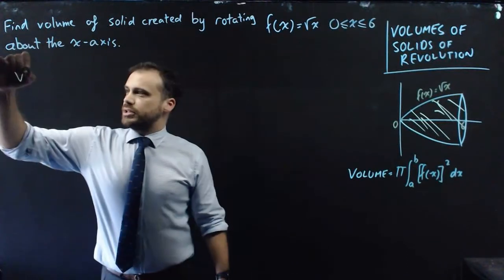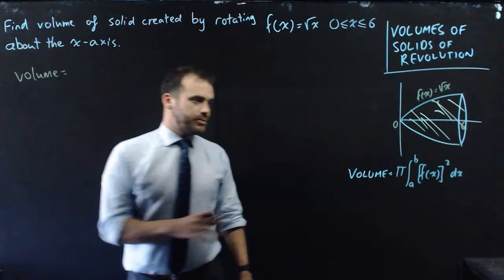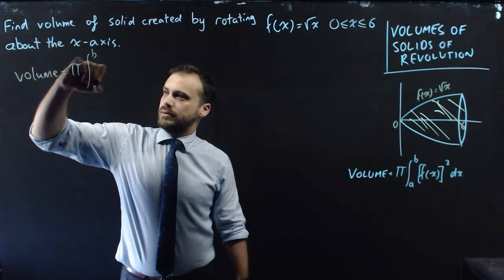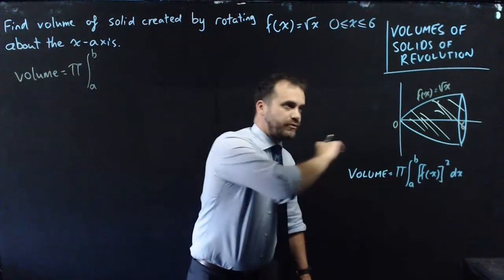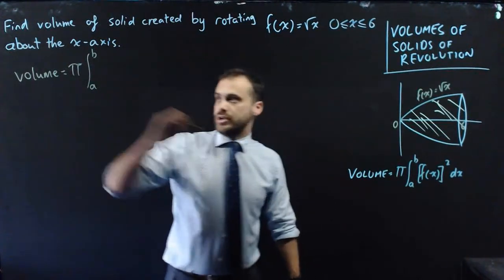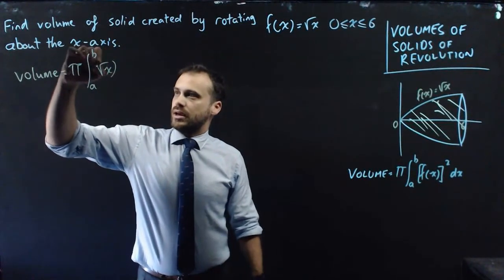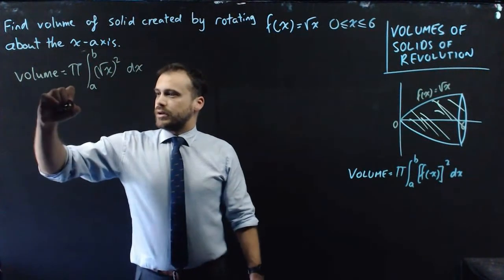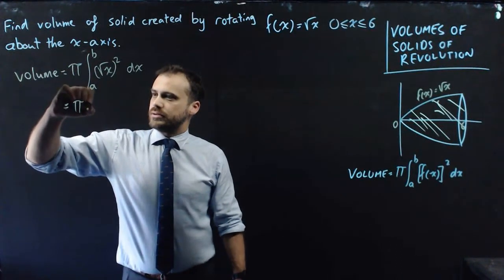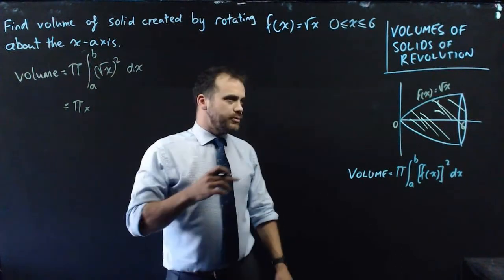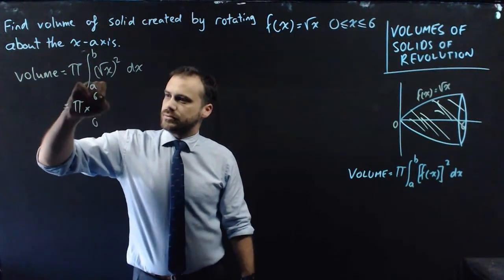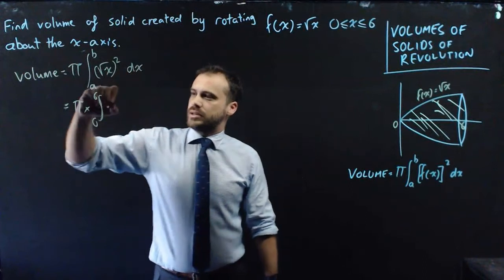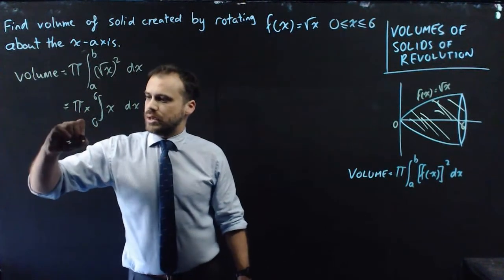Okay, the volume is going to be really easy to find. The volume is going to be equal to pi times the integral between b and a of f of x squared. Now, f of x is root x, and root x squared, well, that's going to be really easy to find. So we have pi times, now b and a, what was that? That was 6 and 0.